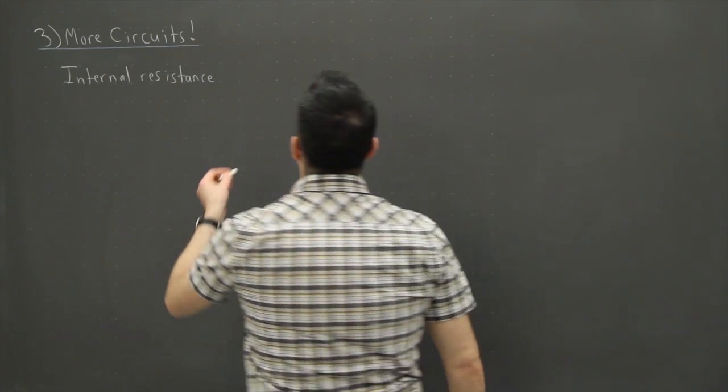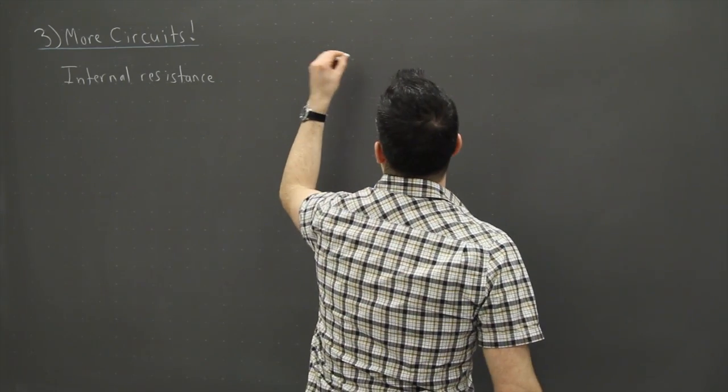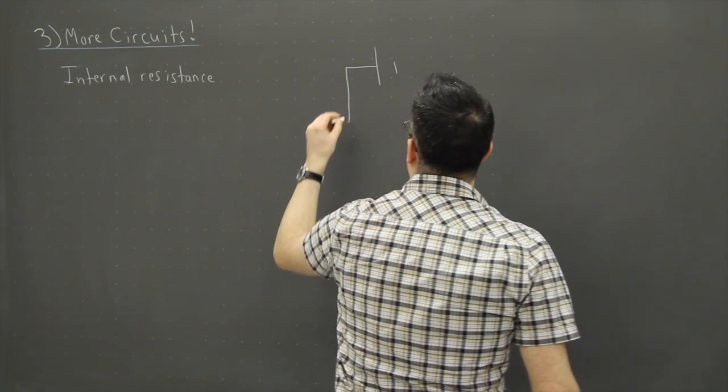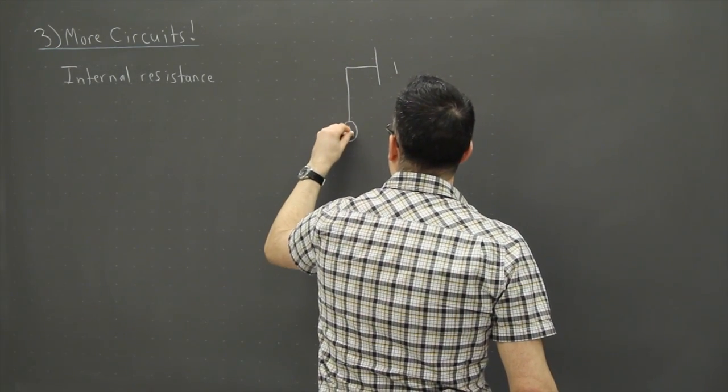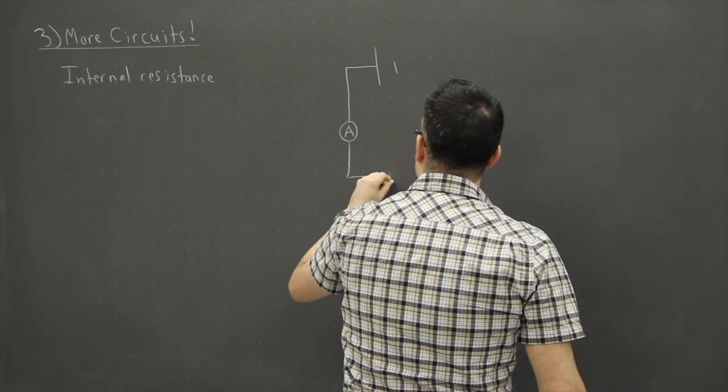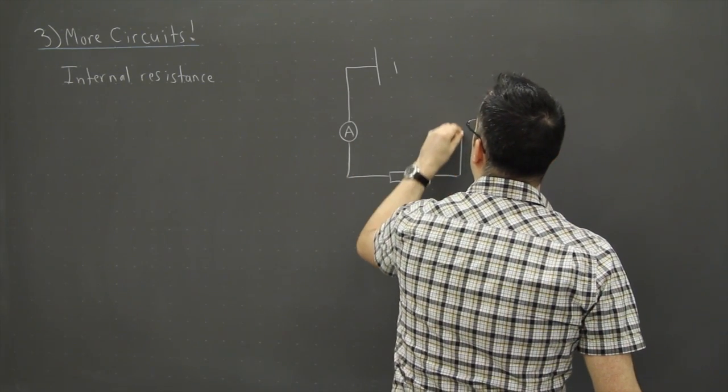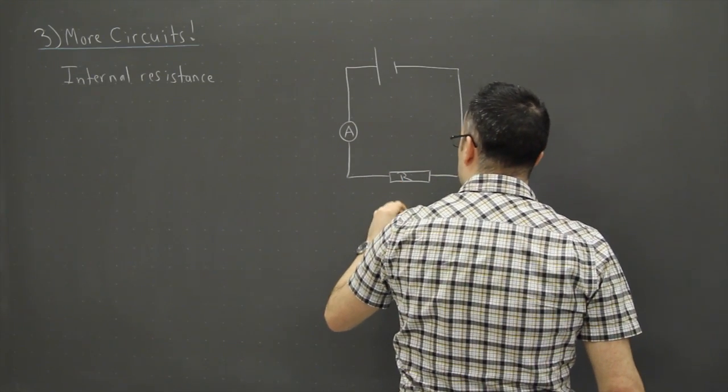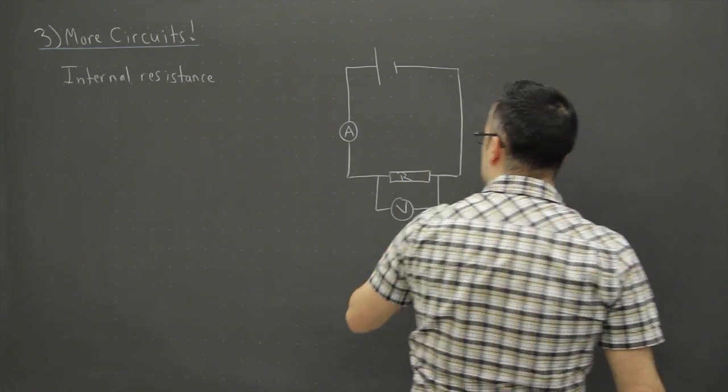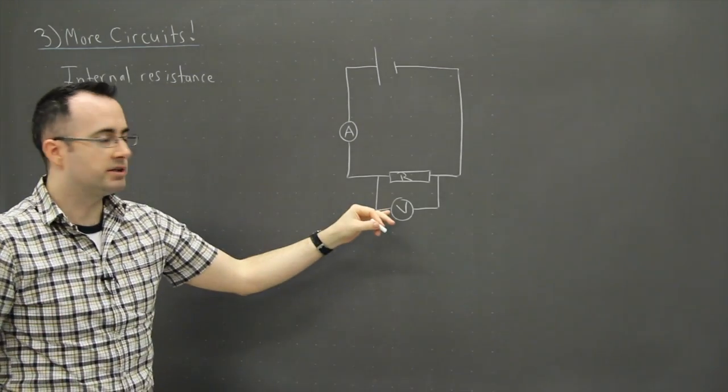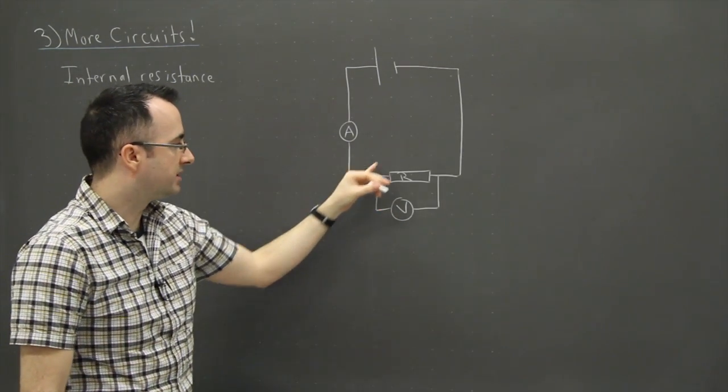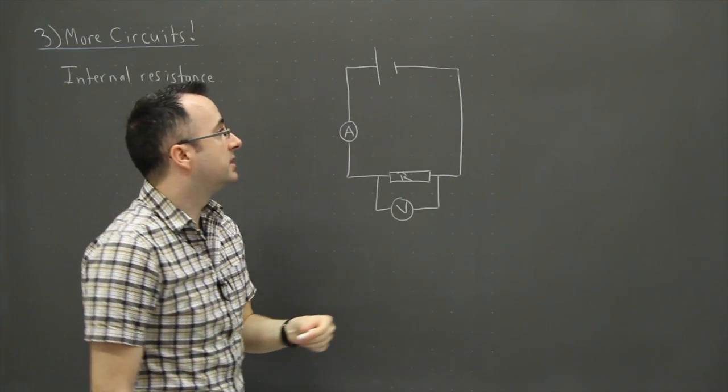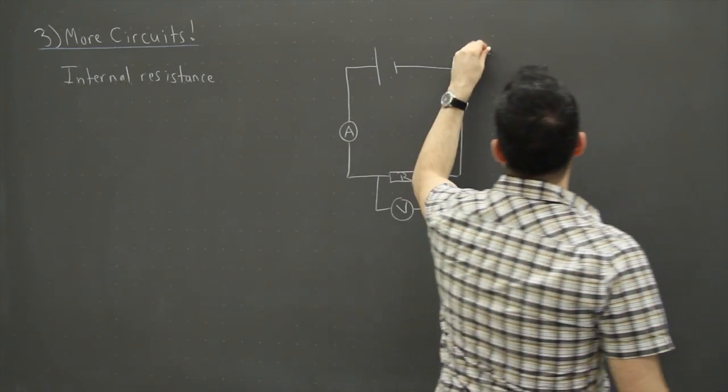Before we had a circuit like this, so let's say we have this going like this, and then we had an ammeter, and then we had a resistor. We could even plug in a voltmeter across this in order to measure the lost potential difference, or in this case the lost voltage. And this is the gained voltage.